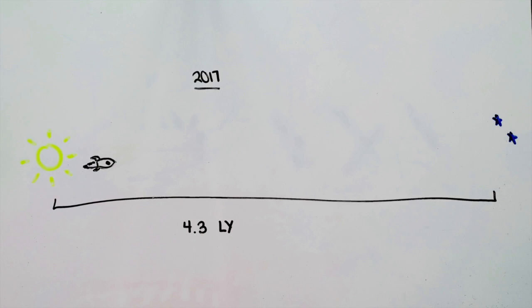Our sun's closest stellar neighbor, Alpha Centauri, is approximately 4.3 light-years away. This means that even traveling at the speed of light, it will still take 4.3 years to reach Alpha Centauri.